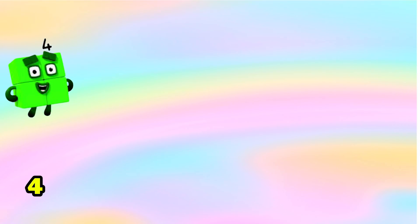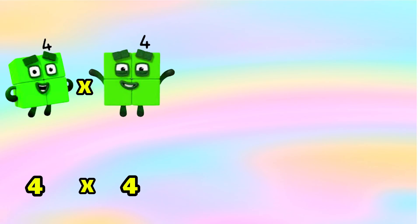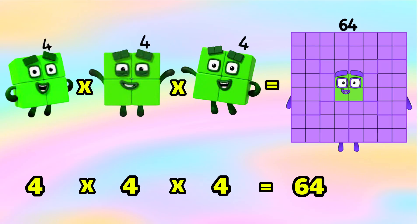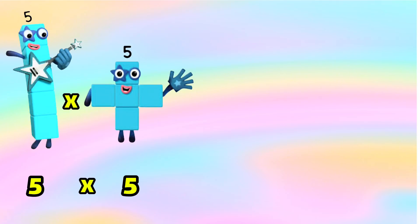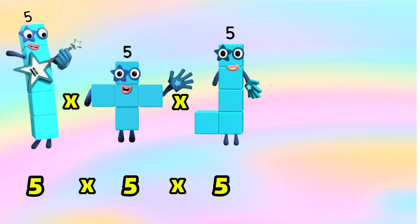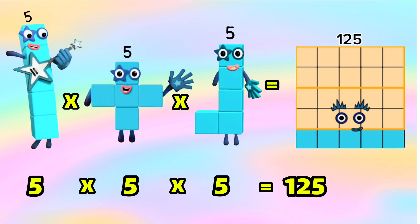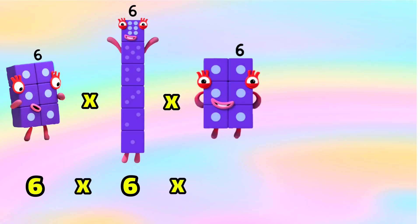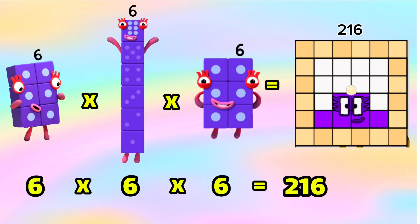Next, 4 times 4 times 4 is equals to 64, or 4 cube. 5 times 5 times 5 is equals to 125, or 5 cube. 6 times 6 times 6 is equals to 216, or 6 cube.